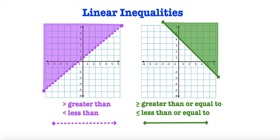If you recall back to our previous video, remember that if we have a greater than or less than sign, then we're going to draw a dotted line. If we have a greater than or equal to or a less than or equal to sign, we're going to draw a solid line.